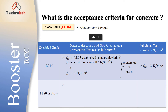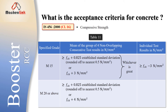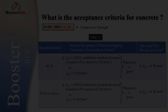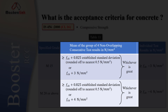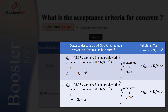For M20 or above, the mean of the group should be greater than or equal to FCK plus 0.825 times the established standard deviation, rounded off to the nearest 0.5 N/mm², or FCK plus 4 N/mm², whichever is greater. And individual test results should be greater than or equal to FCK minus 4 N/mm². These are the two criteria for acceptance and rejection of concrete.